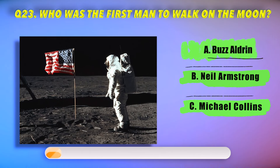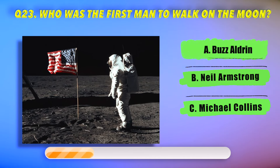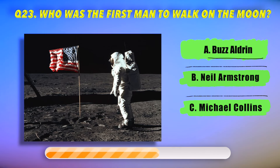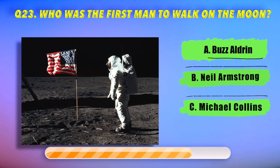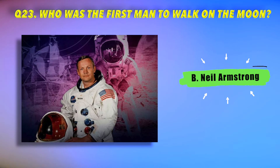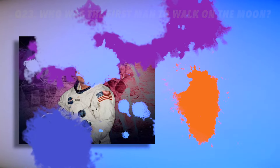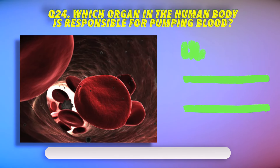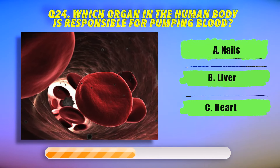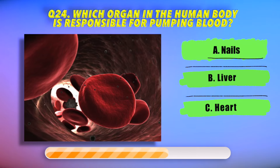Who was the first man to walk on the moon? Question 24: Which organ in the human body is responsible for pumping blood?